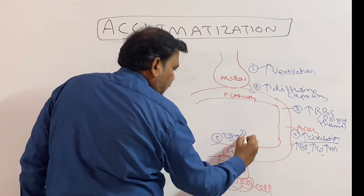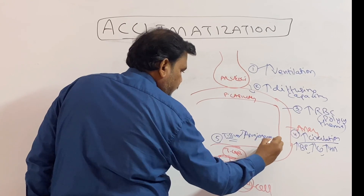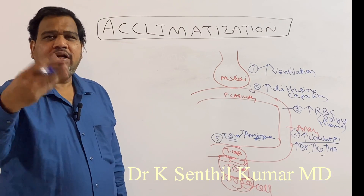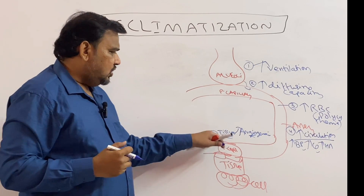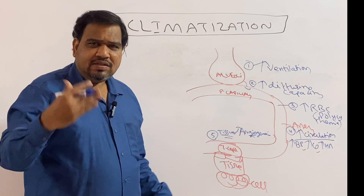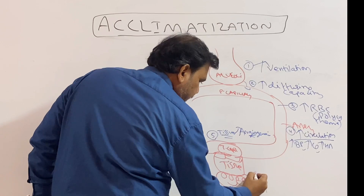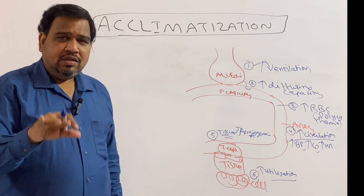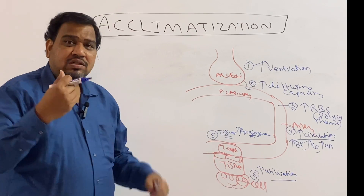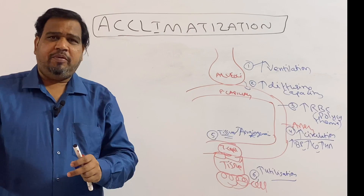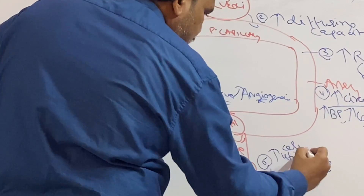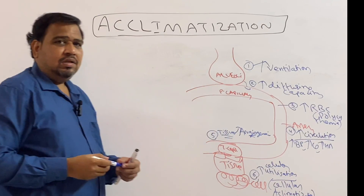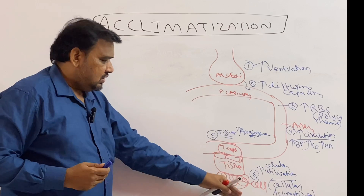Point number five: at the tissue level there is angiogenesis — angio means vessel, genesis means production — so there is production of new blood vessels. Minor blood vessels are newly developed at the tissue level; that is called angiogenesis, or increasing tissue vascularity. At the cellular level, point number six: there is increased utilization of oxygen. Even though there is hypoxia at high altitude, because of acclimatization the cells increase utilization — this is called cellular acclimatization.